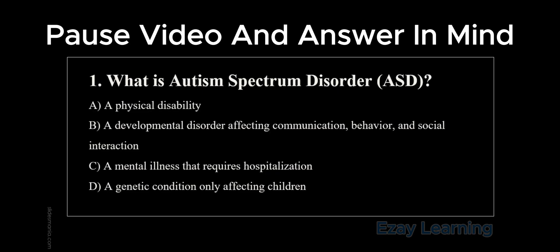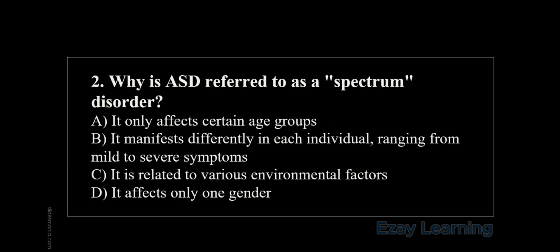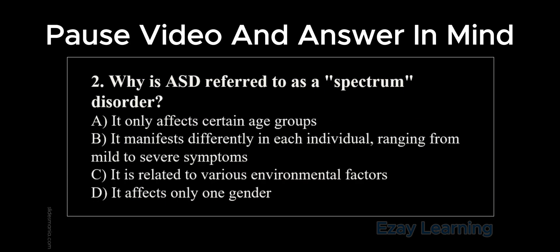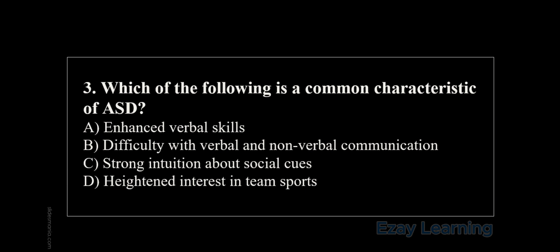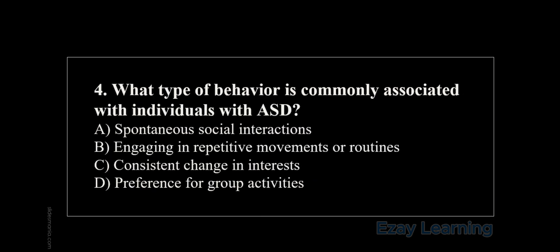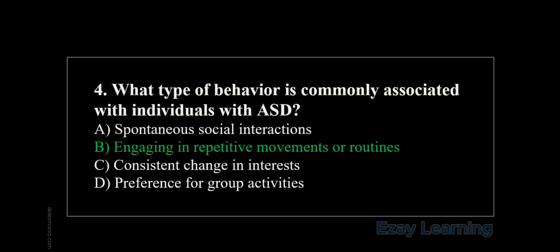What is autism spectrum disorder? The answer is: a developmental disorder affecting communication, behavior, and social interaction. Why is ASD referred to as a spectrum disorder? The answer is B — it manifests differently in each individual ranging from mild to severe symptoms. Which of the following is a common characteristic of ASD? The answer is B — difficulty with verbal and non-verbal communication. What type of behavior is commonly associated with individuals with ASD? The answer is B — engaging in repetitive movements or routines.